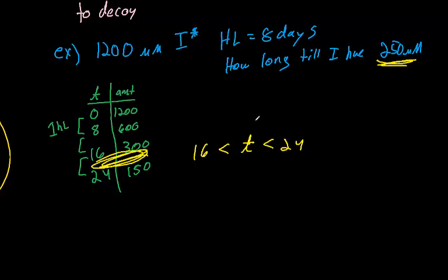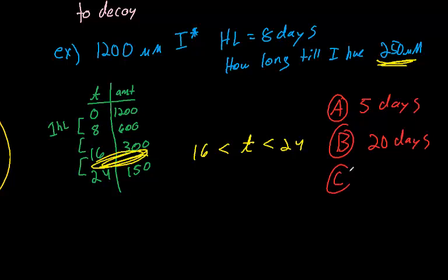Now, the MCAT is a nice exam in that usually when you have number problems dealing with stuff like this, the answers are pretty evenly dispersed. So, for example, we might see answers: A will be five days, B will be 20 days, C will be 32 days, I'm just making these numbers up, and D will be 45 days.